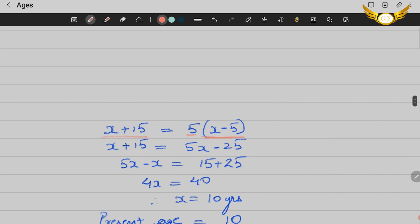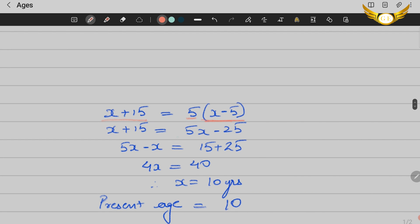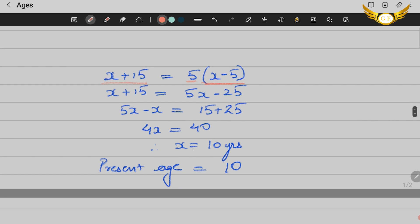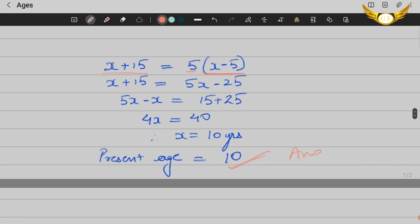Solving this equation, I've got the answer as X equals 10, which means Krishna's present age is 10 years. This was quite a simple solution, not very complicated.